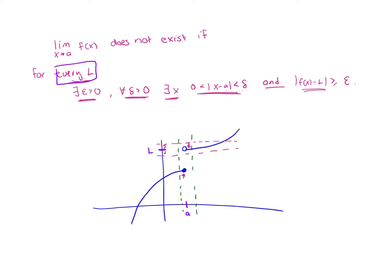If I move my L, I can still pick some epsilon small enough so that if I look at that new epsilon range, I'm still not going to get the function in that range. No matter where I put my L, I can't get the entire function to be in that epsilon range, because some of the function is up at the top and other parts are down below. So for every L I can always find some epsilon so that it's impossible to get all of the function within epsilon, and I can find some x within delta of A where this fails.